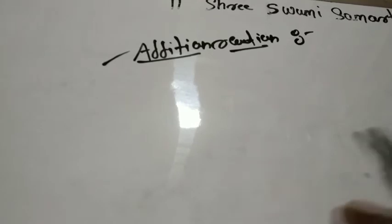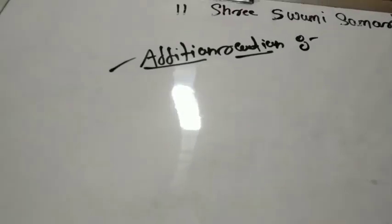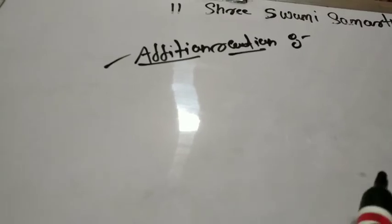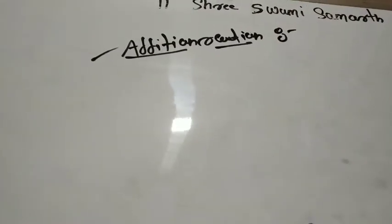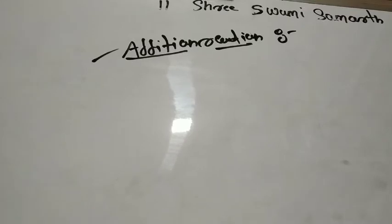In substitution, replacement of an atom or group takes place. In elimination, total removal takes place. In addition reaction, addition of an atom or a group takes place — that is called the addition reaction.